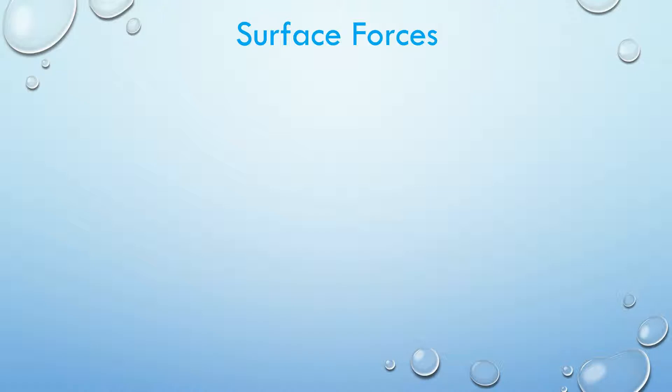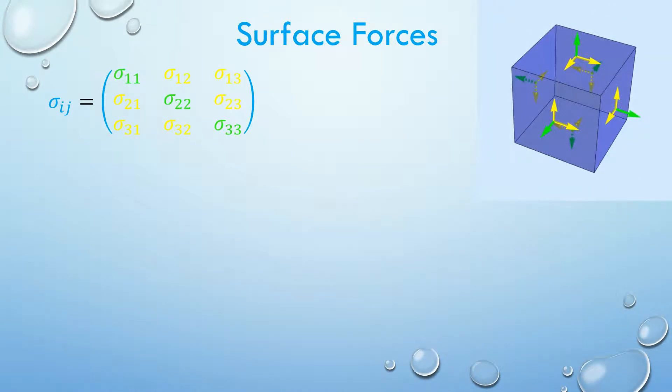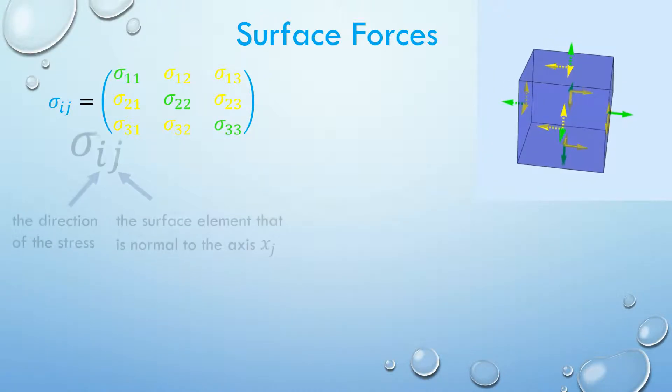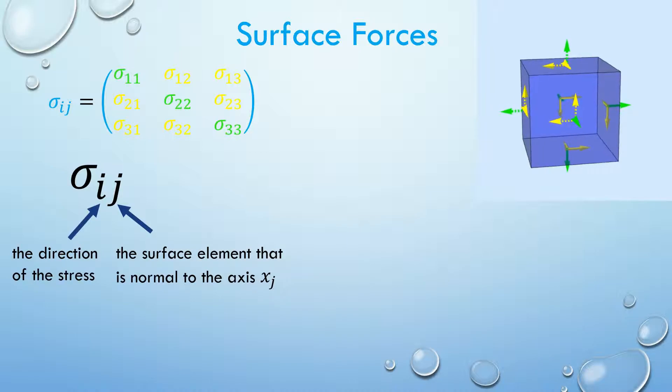Surface forces will apply stresses on the surface of the cube, which can be represented by the fluid stress tensor here. This animation shows where the stresses act on each face. The green arrows are the normal stresses and the yellow arrows are the shear stresses. The opposite faces would experience stresses showing dashed arrows that relate to their solid counterparts, as we will see soon. These sigmas have suffix notation ij, where i is the direction of the stress and j is the surface element or face that is normal to the axis xj.